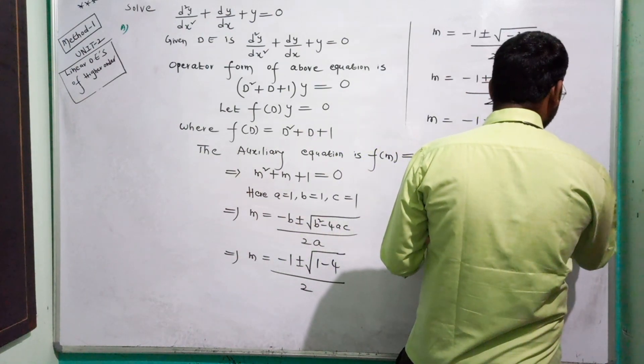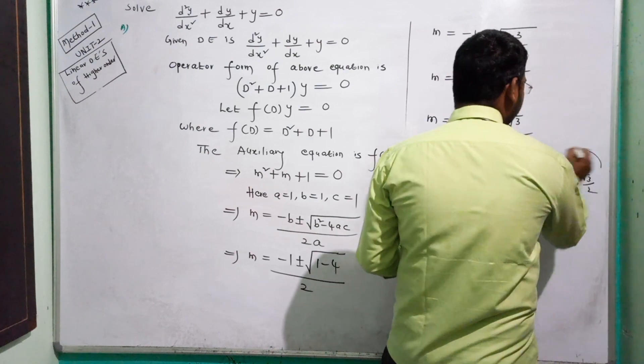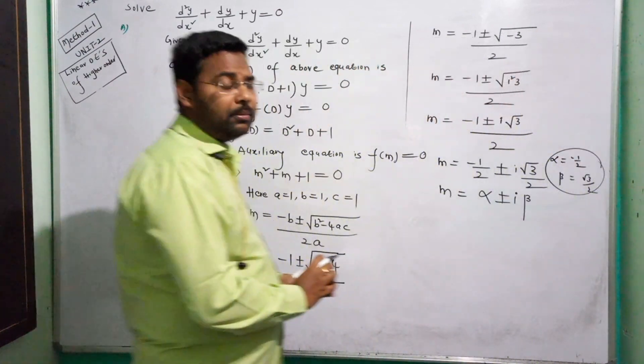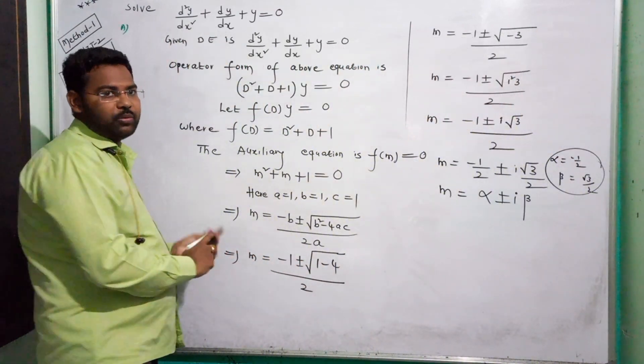Alpha is minus 1 by 2, beta is root 3 by 2. Now we can find the complementary function.